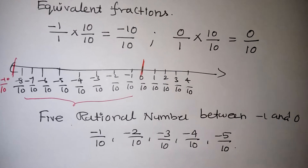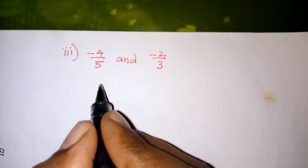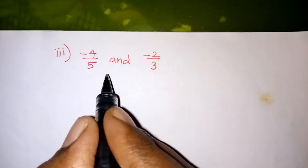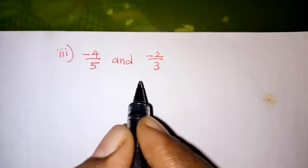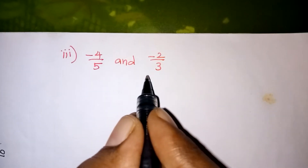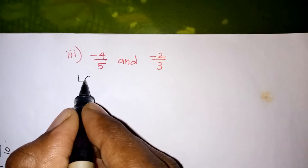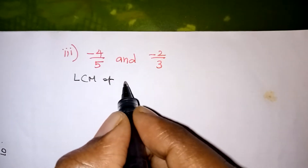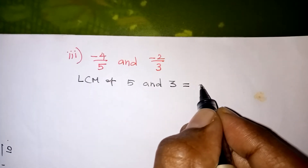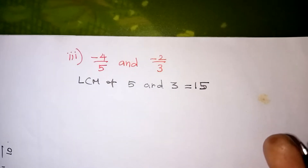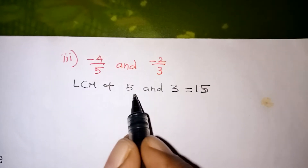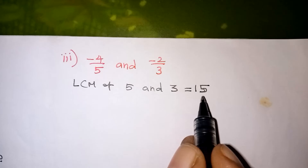Now we will move on to one more problem. The next question involves minus 4 by 5 and minus 2 by 3 — we need to find 5 rational numbers between these two. The first step is to make the denominators the same. Here we have 5 and 3, so we have to find the LCM first. The LCM of 5 and 3 — since they have no common factors — is 15. Whenever numbers have no common tables, you can multiply them to get the LCM, so the LCM is definitely 15.